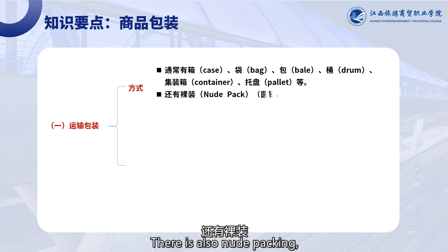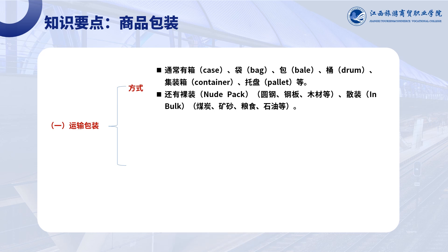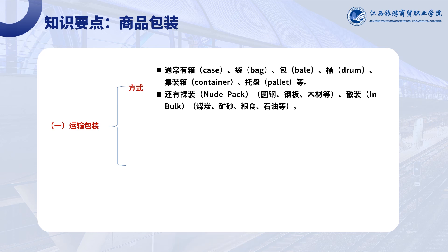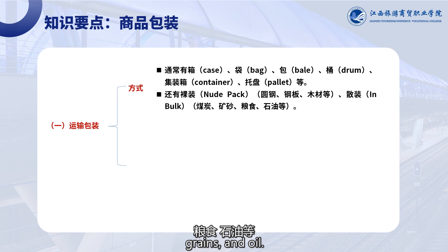There is also nude packaging, used for round steel, steel plates, wood, and so on. Loose packaging is used for materials such as coal, ore, grains, and oil.